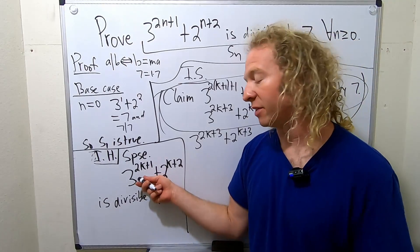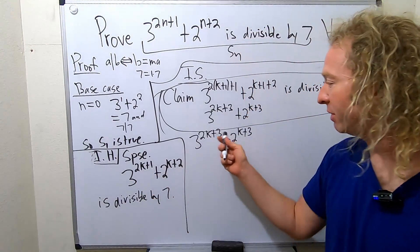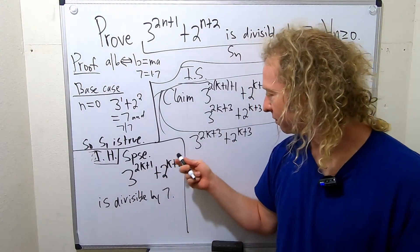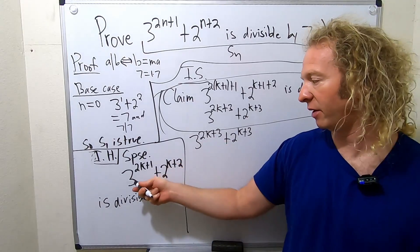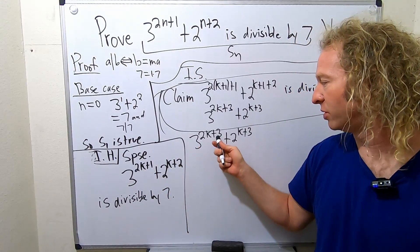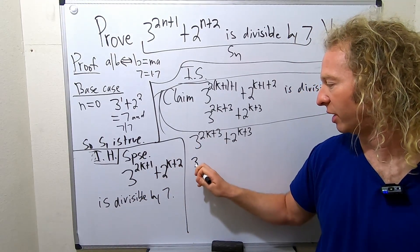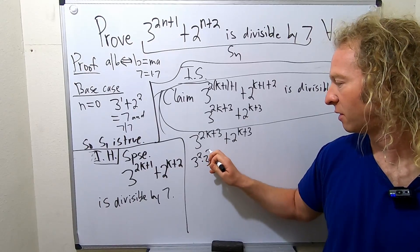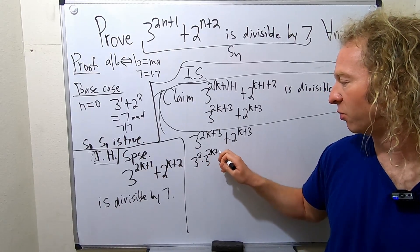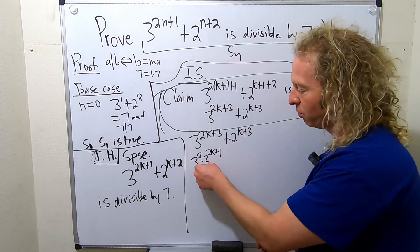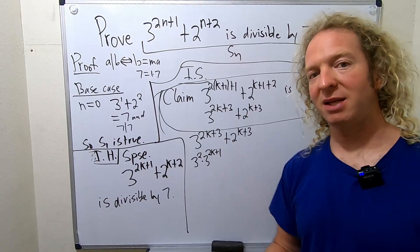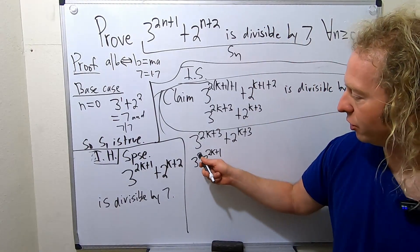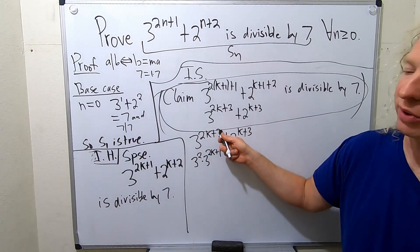We definitely have to use this. So I think we should start by manipulating this to make it look like this. So you've got the 3 to the 2k, right? But here's a 1, here's a 3. So what you can do is you can pull out a 3 squared like this. Watch this. 2k plus 1, right? Because when you multiply these, you actually add the exponents, right? You do 2 plus 1, and that's equal to 3.